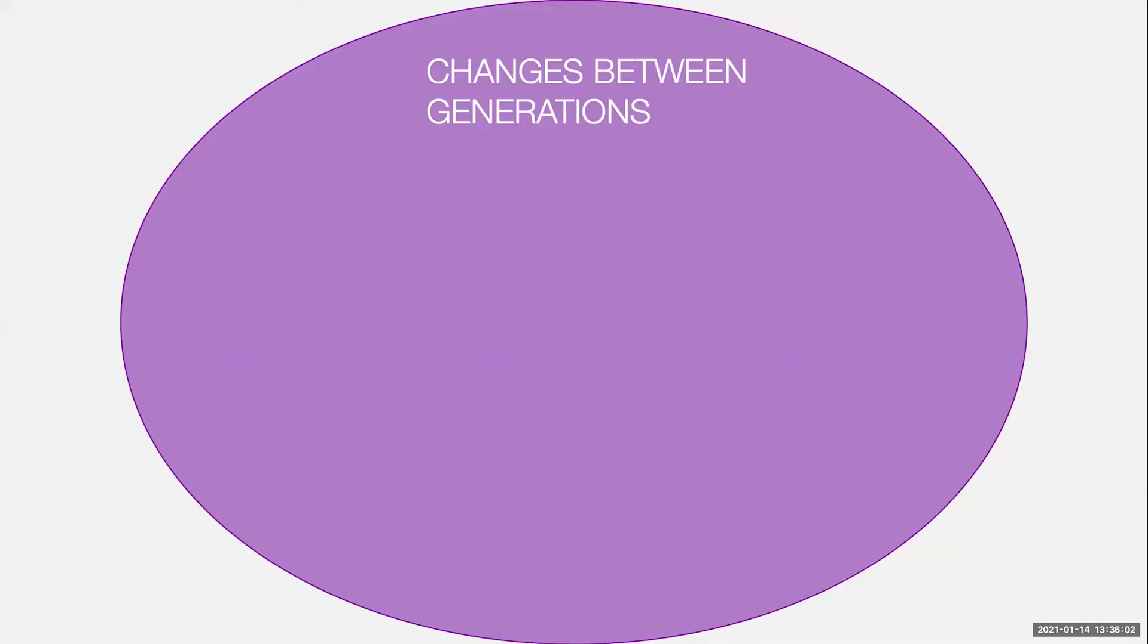Before we get to genomic epidemiology or phylogenetics, I want to quickly go past evolution, which is the underlying core of everything that we do. So changes between generations, and when we're talking about this with viruses, we're talking about mostly genetic changes, these mutations.